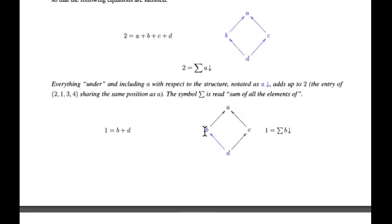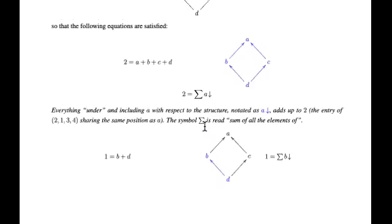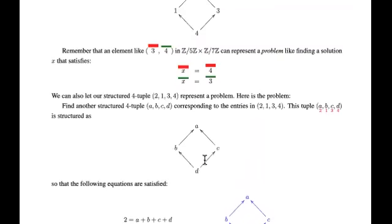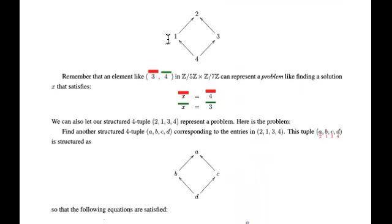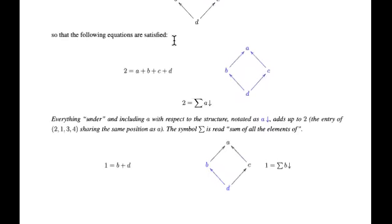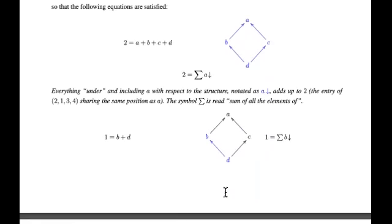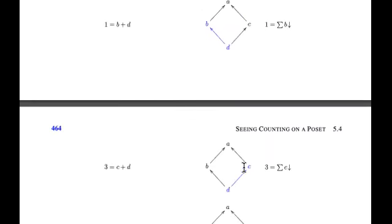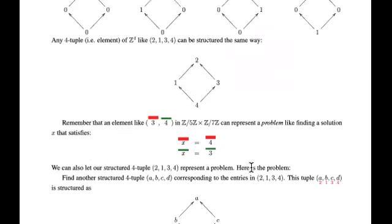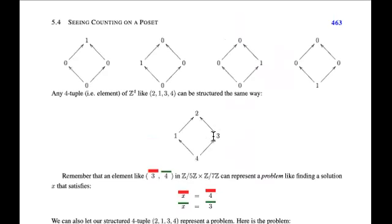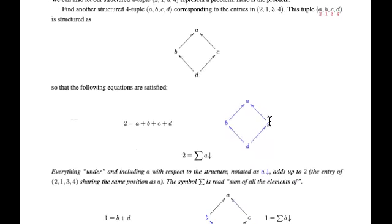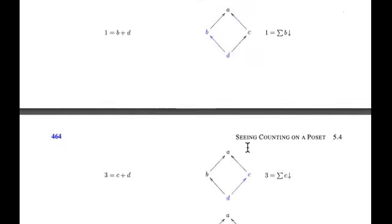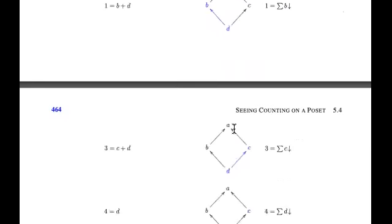What about b? The value in position b is 1. So 1 is going to be the sum of b plus d — everything at point b and below it. And 3 was in another location, and we want 3 to be the sum of everything below it in the tuple we're looking for. So we're looking for a, b, c, d, and we want 3 to equal c plus d in the new tuple.